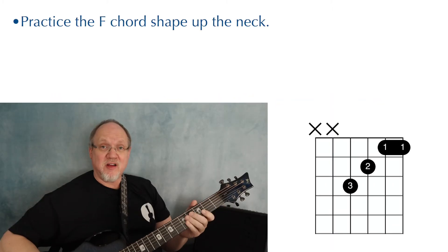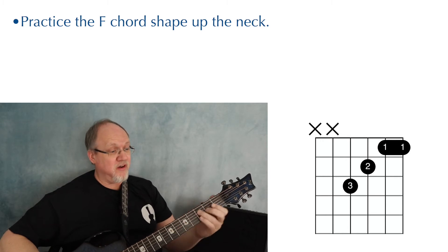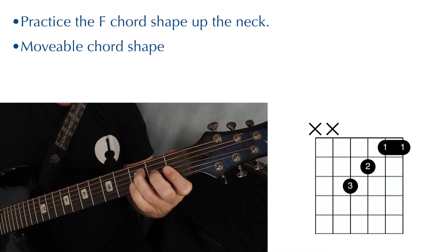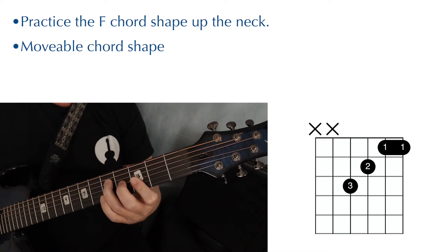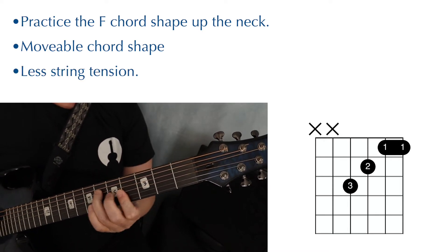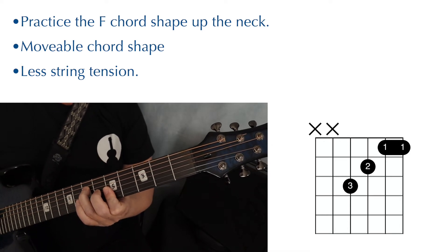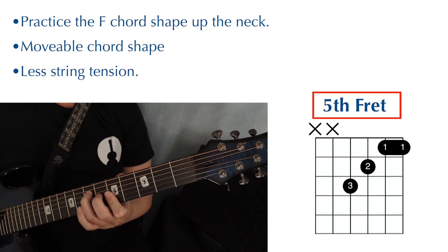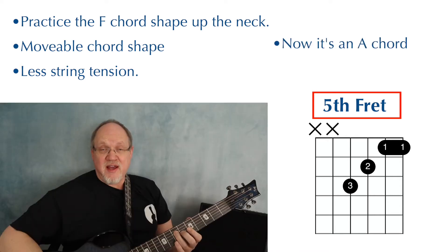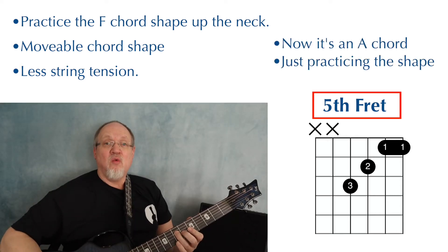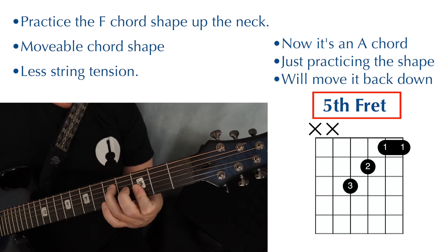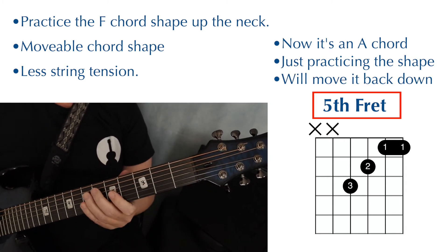Now let's talk about that F chord. The first thing we're going to do is play it up the neck. This is a movable chord shape. And most people find it easier to play bar chords higher up the fretboard where there's less string tension. So we're going to move it up to the fifth fret. This is really an A chord, but that doesn't matter. What we're working on is the shape and we're eventually going to work it back down to the first fret.